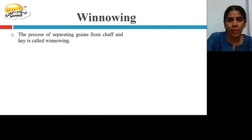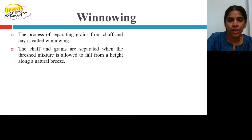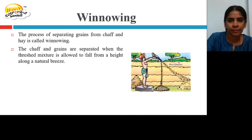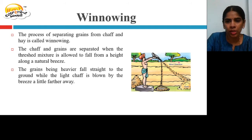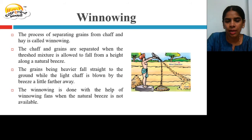Winnowing is the process of separating grains from chaff and hay. The threshed mixture is allowed to fall from a height along a natural breeze. The grains, being heavier, fall straight to the ground while the light chaff is blown by the breeze a little further away. Winnowing is also done with the help of fans when natural breeze is not available.